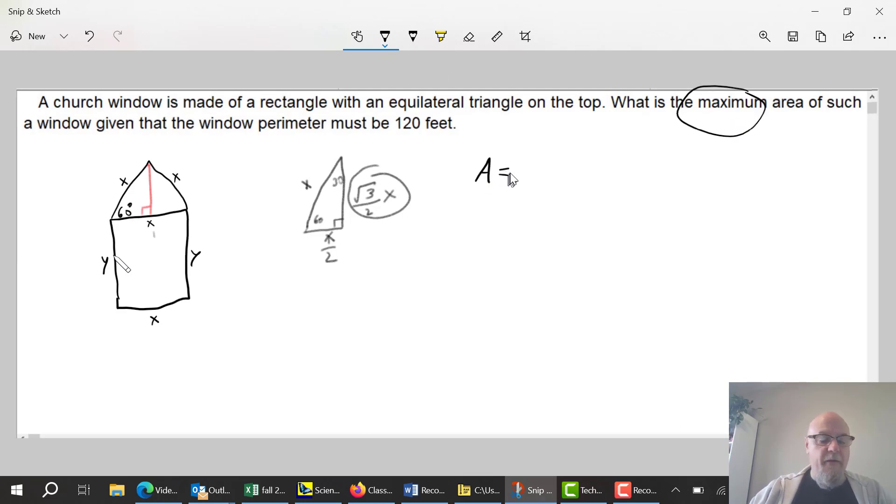So the area is going to be the rectangle, which is X times Y, plus the triangle, which is 1 half base times height. Let's clean that up - that's X times Y plus root 3 over 4 X squared. That's the area that I'm trying to maximize.